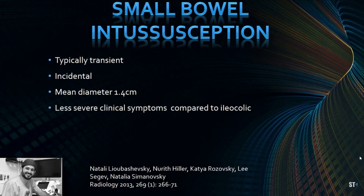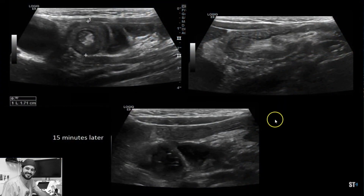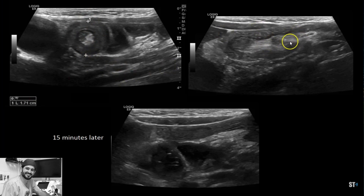Small bowel intussusception is typically transient and an incidental finding — you might order an ultrasound for an appendix and notice a small intussusception-like lesion, usually not in the right upper or right lower quadrant where the ileocolic type usually is. They're smaller than large bowel intussusceptions; the mean diameter is about 1.4 centimeters. Here's an eight-year-old girl with one in the right upper quadrant — you can see the gallbladder and this intussusception as a target-like lesion, measuring 1.7 centimeters, which is relatively small.